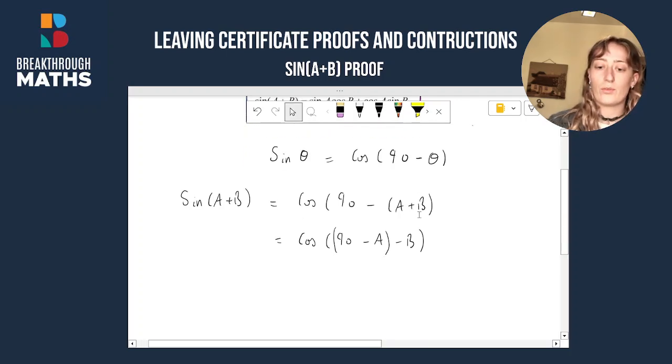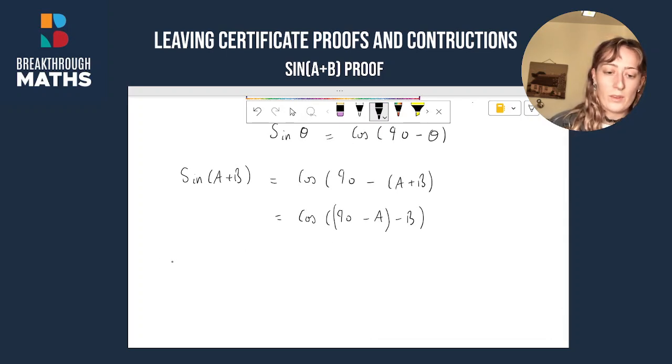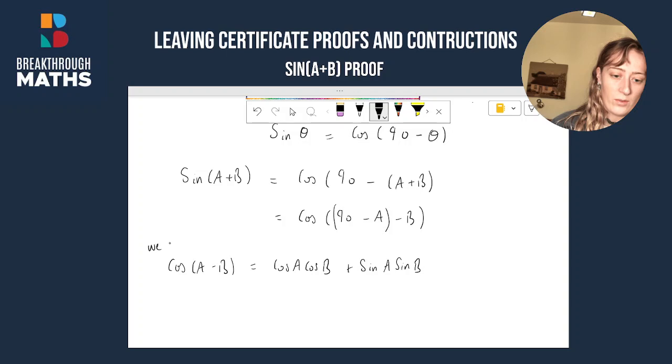I haven't changed anything there, we've just rearranged our brackets a little bit. Now, we know from our log tables that the formula for cos of a minus b is equal to cos a cos b plus sine a sine b. So we know that.